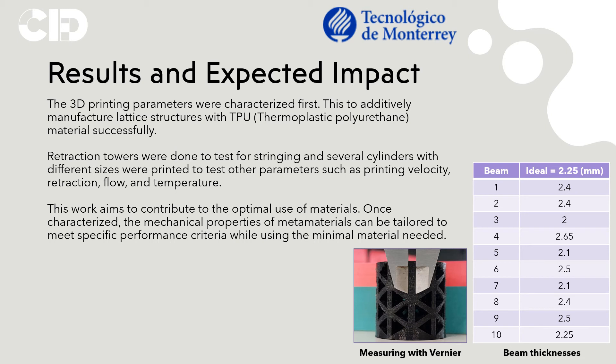Nevertheless, dimensional accuracy is still an issue, as demonstrated by the image on the table on the right. As can be seen on the table, the actual beam thicknesses vary between a range of 2 and 2.65 mm, when the ideal beam as designed in SolidWorks measures 2.25 mm. A method to minimize this variability in the thickness of the beams must be established.